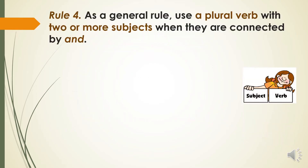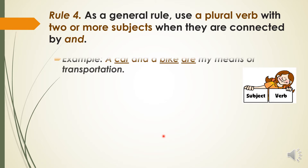As a general rule, use a plural verb with two or more subjects when they are connected by 'and'. For example, 'A car and a bike are my means of transportation.' Two subjects are connected with 'and'.